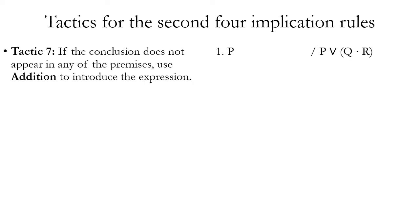Another tactic: if the conclusion does not appear in any of the premises, use addition to introduce it. For example, if we have only one premise P and we're trying to prove P wedge Q dot R, notice that Q and R are not in our premises. In this case it's easy — it's a one-step proof because the conclusion is itself a disjunction. We can just use addition to introduce the wedge and the second disjunct exactly as we need it.